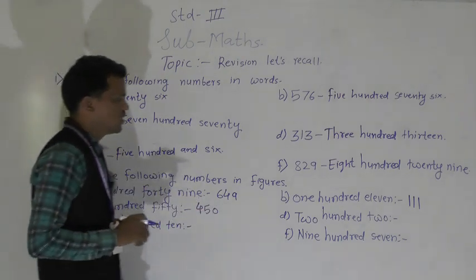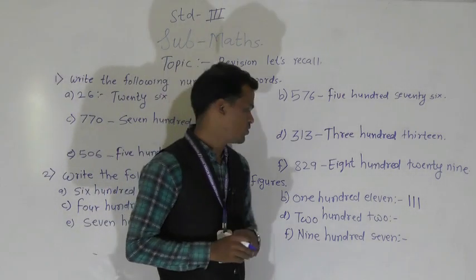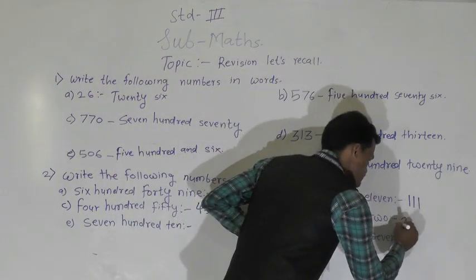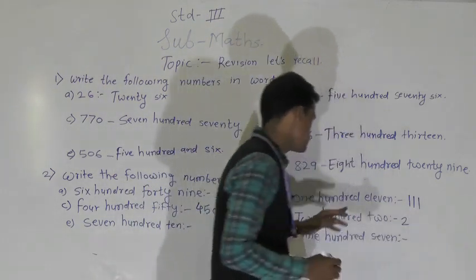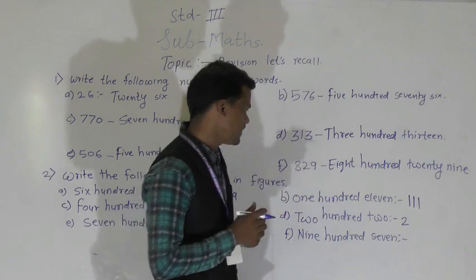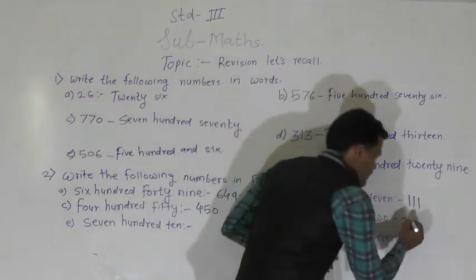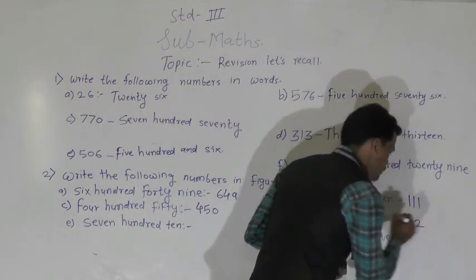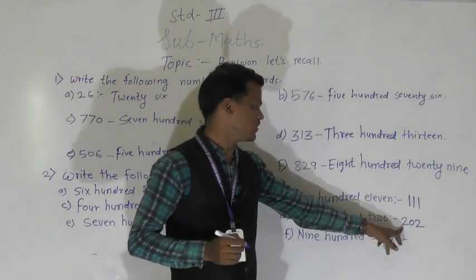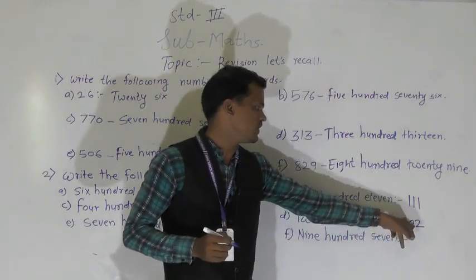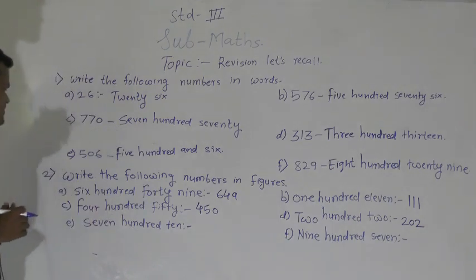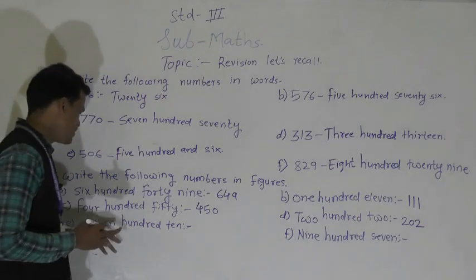Next number: 202. Write 2 at the hundreds place. There is no digit at the tens place, so write 0 there. And write 2 at the ones place. So this number is 202. Next number: 710. Write 7 at the hundreds place, so 710 is formed.